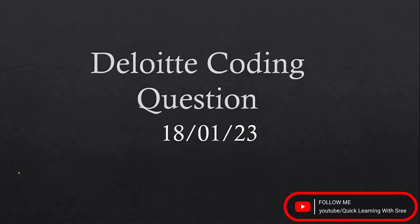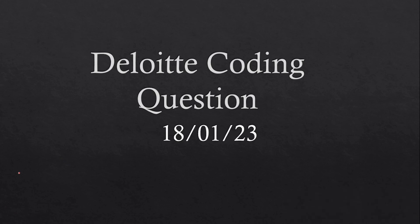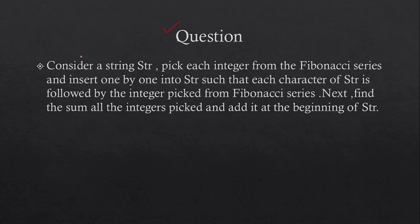Hello friends, welcome to a new video. In this video I'm going to discuss another Deloitte coding question — this question came on 18 January. Now let's see the question. Consider a string 'str'. Pick each integer from the Fibonacci series and insert them one by one into the string such that each character of the string is followed by the integer picked from the Fibonacci series. Then find the sum of all the integers picked and add it to the beginning of the string.